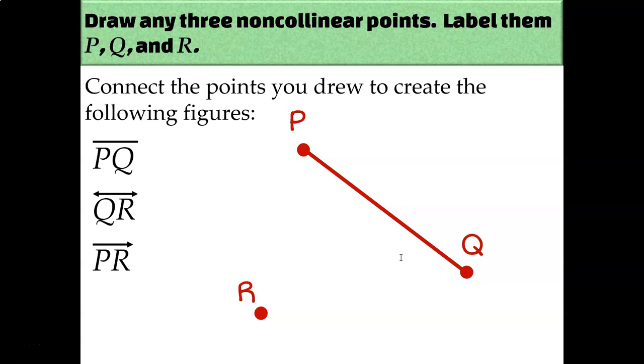Whereas QR has arrows on both sides. So when I draw line QR, it needs to have arrows that go beyond the points. And then PR is a ray. I can tell that it's a ray because the symbol above those letters, one side has an arrow, and the other side doesn't. It's important though that you make sure that your ray that you draw between point P and point R goes in the right direction.